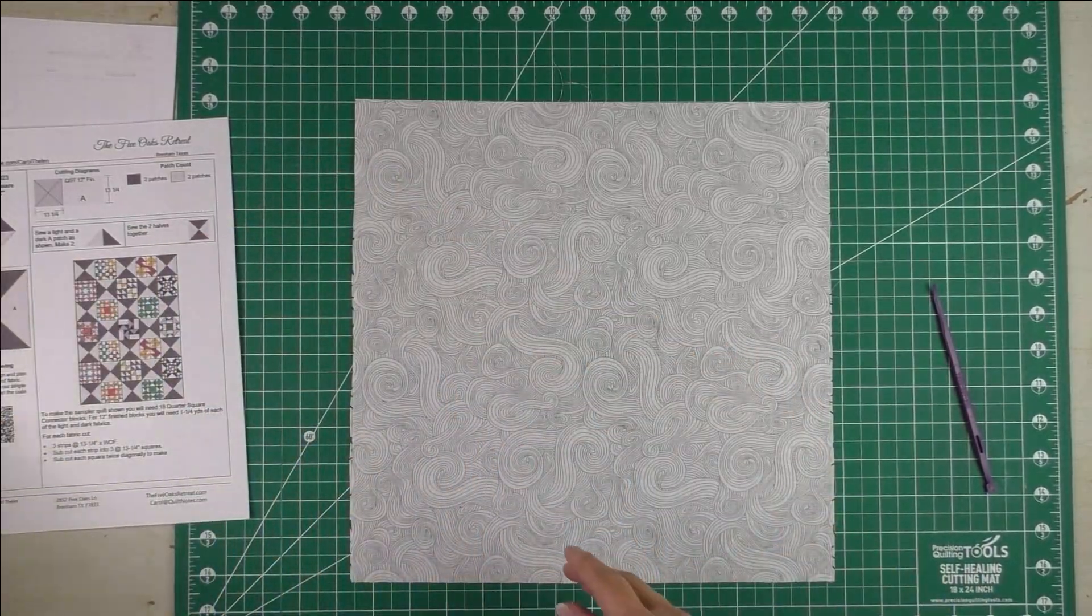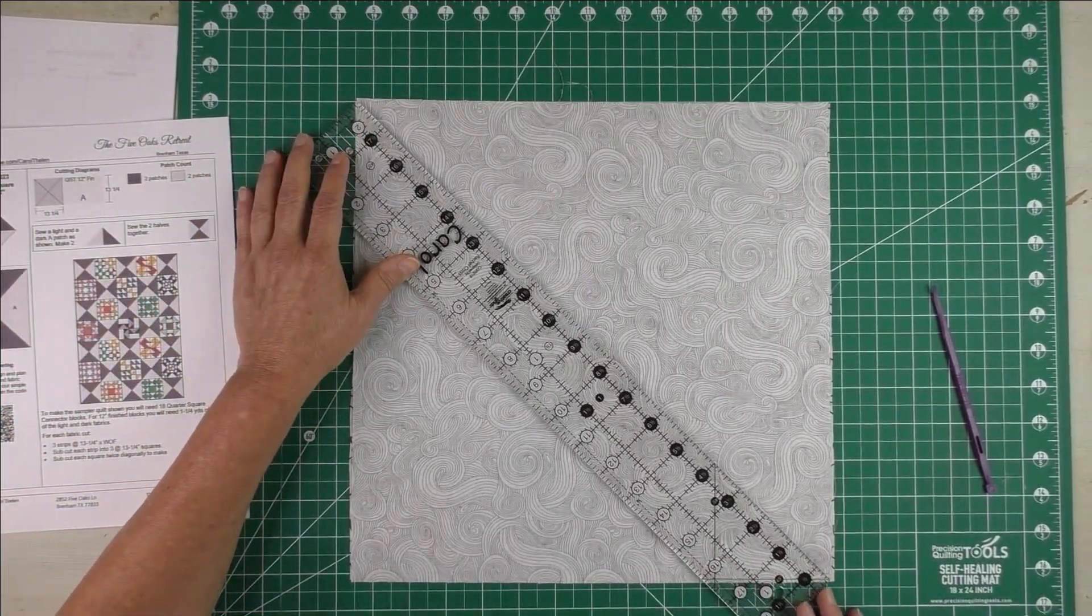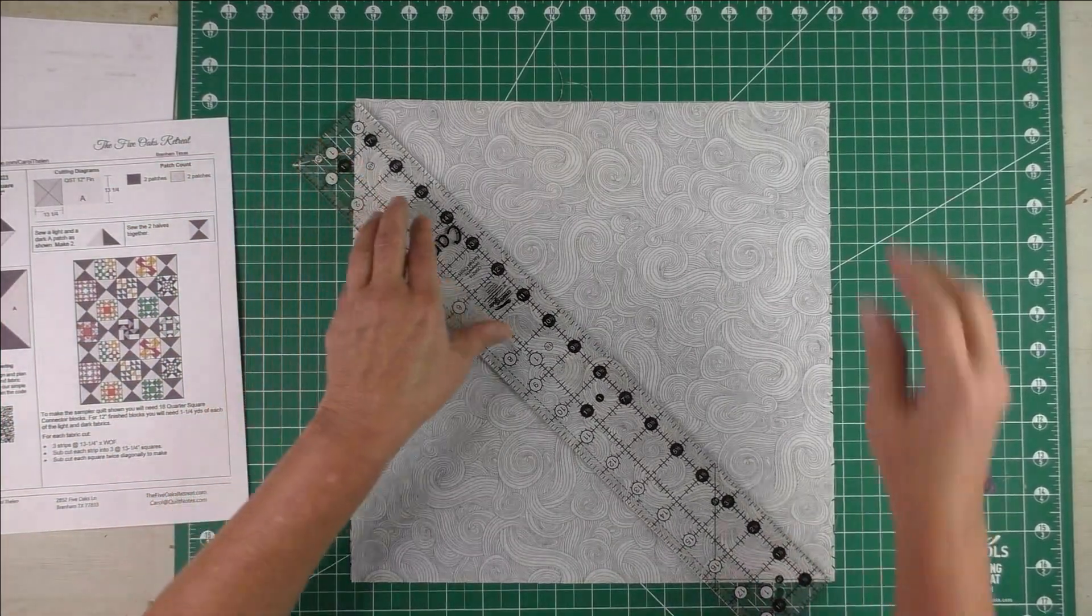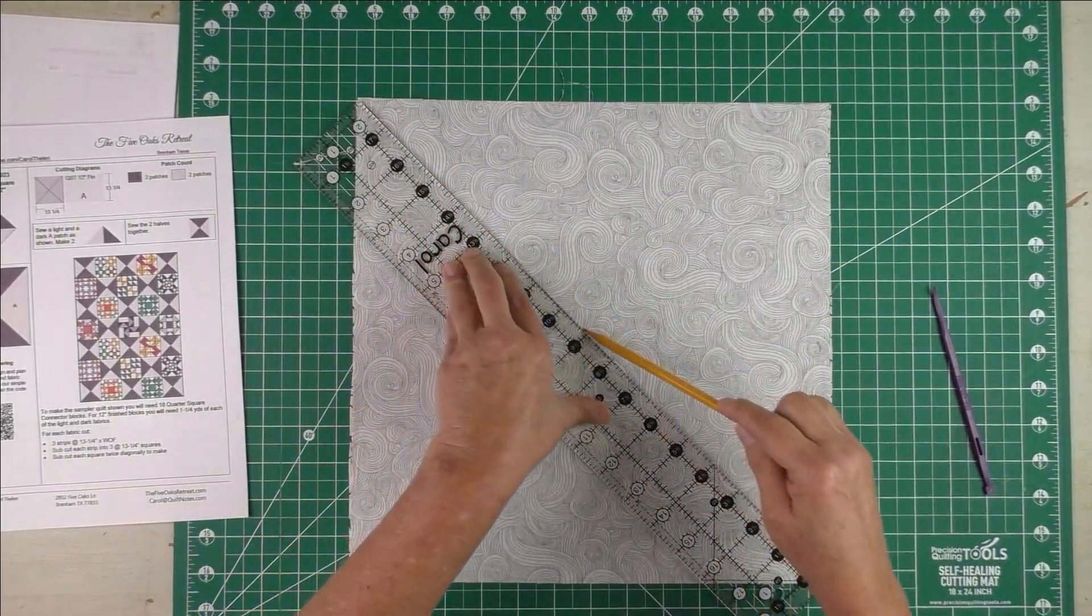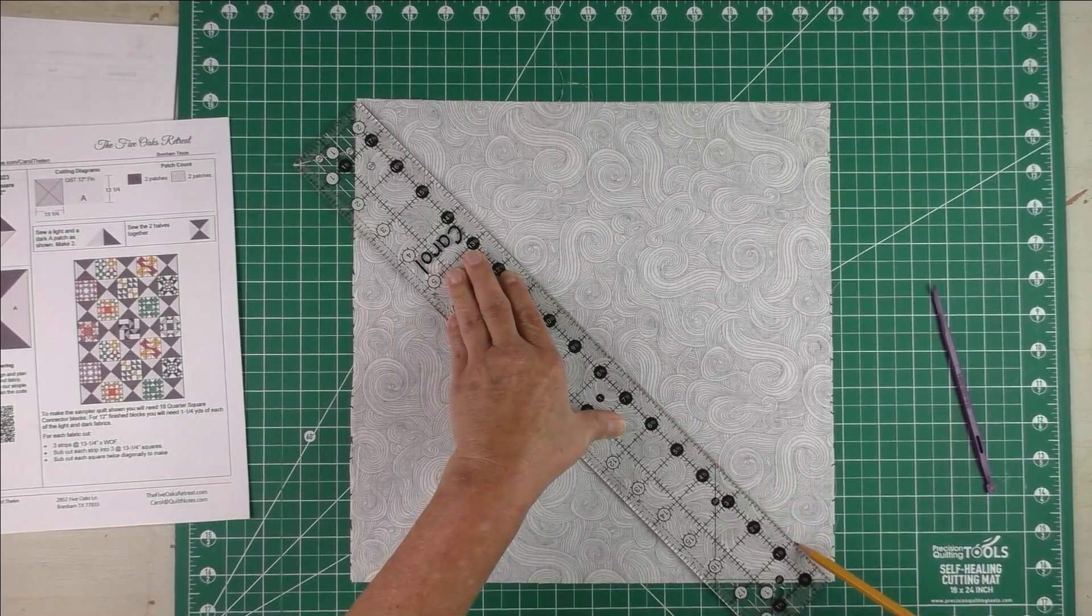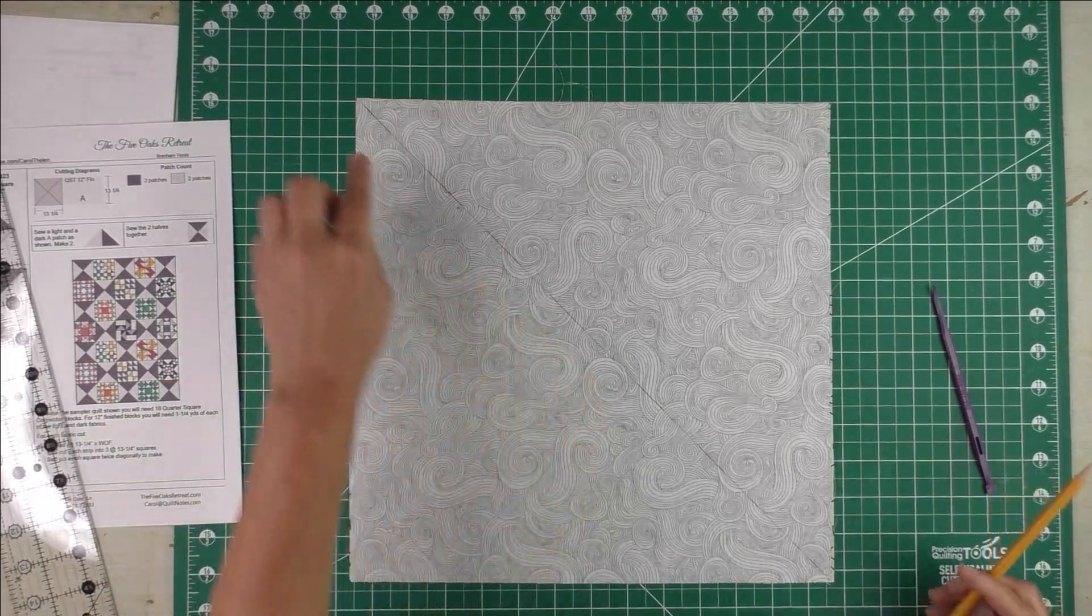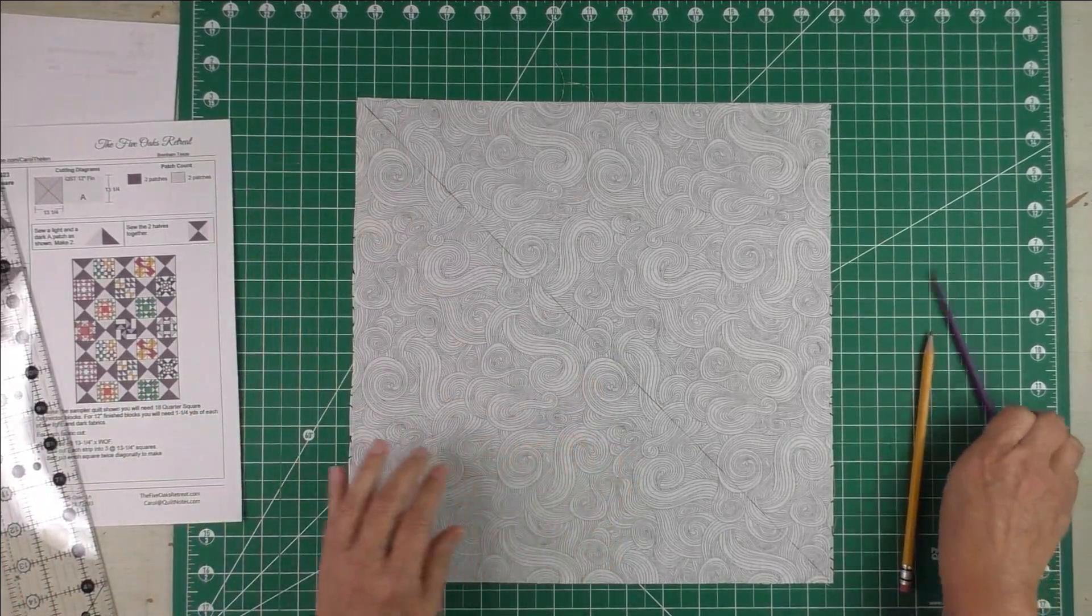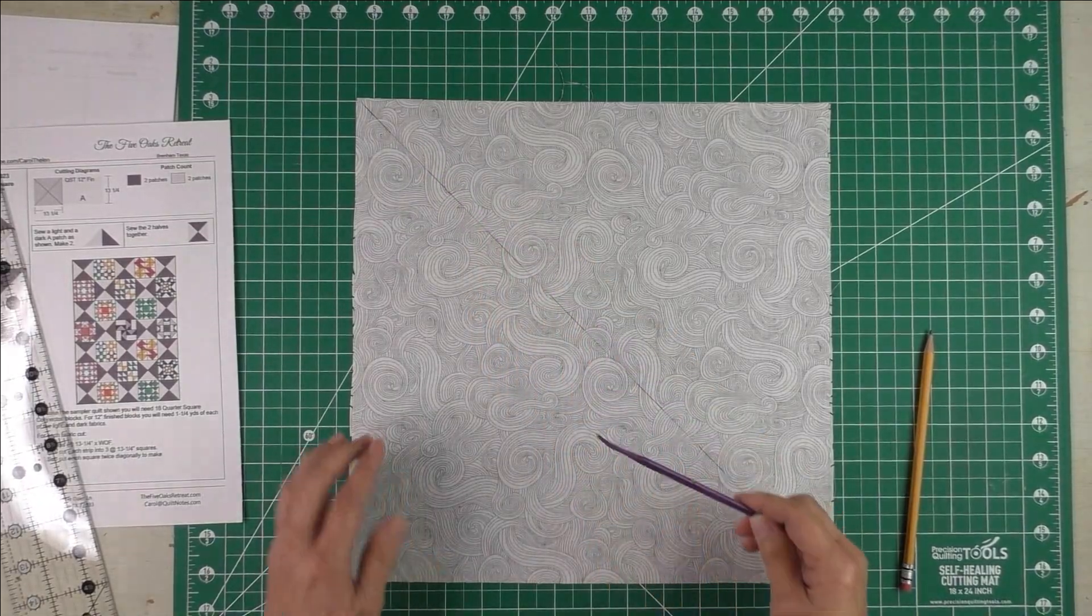I'm going to draw a diagonal line and I'm actually going to make two giant half square triangles. So I've drawn this diagonal line. I'm going to stitch on either side of the line, quarter inch, then I'm going to trim on the line and I'll have two big half square triangles.